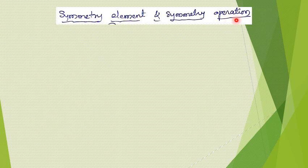First, we should understand these two terms: symmetry element and symmetry operation. For any molecule we can have some symmetry elements, and on those symmetry elements some symmetry operations can be performed. We should know what exactly a symmetry element is, what exactly a symmetry operation is, and what is the difference between these two.